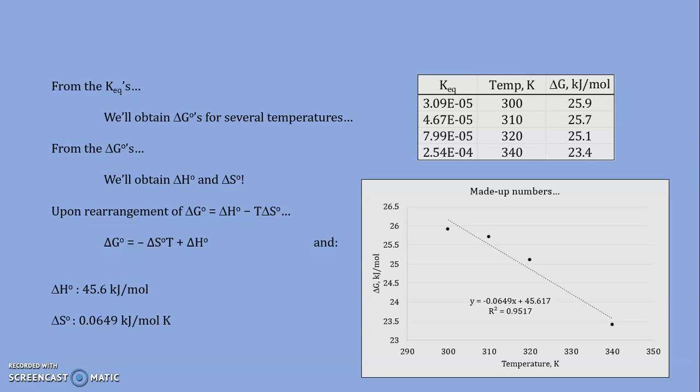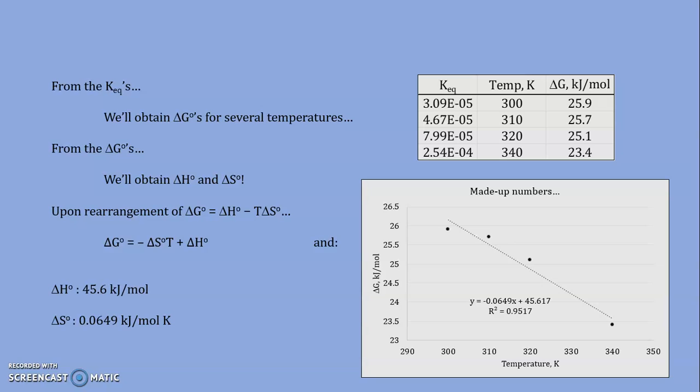And the slope, well, the negative of the slope is the entropy, in the same units as the free energy multiplied by 1,000, and you obtain 64.9 joules per mole kelvin. And that, of course, is the experiment in a nutshell.